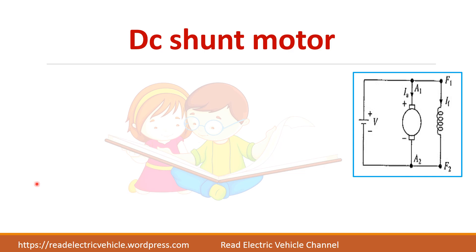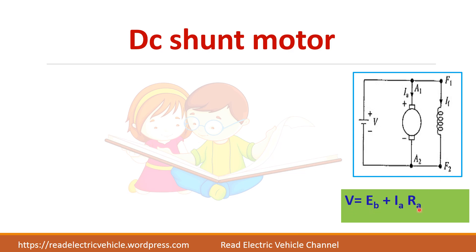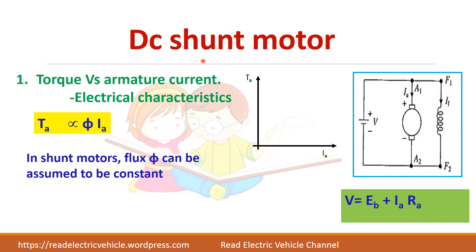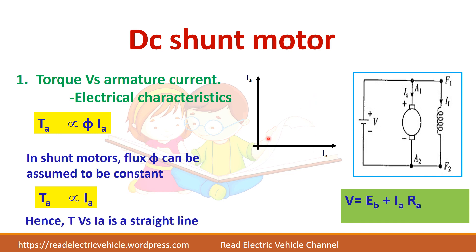Now let us see the characteristics for the DC shunt motor, where the field winding is connected in parallel with the armature. For the first characteristic — torque versus armature current — torque is directly proportional to flux times Ia. Since this is a shunt motor, flux is almost constant, so torque ∝ Ia. This gives a straight line. The shaft torque will be slightly less than the armature torque due to losses.